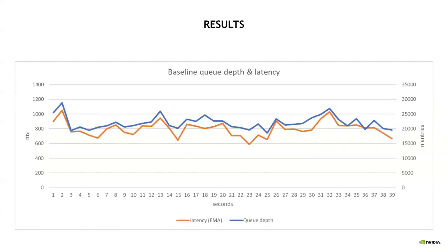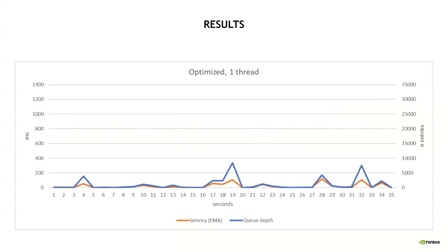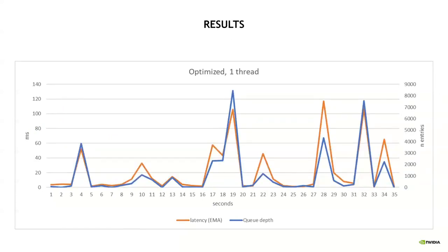This first graph shows the baseline. No change was made to the architecture at this point. The only difference from upstream master is that statistics were collected for the defined metrics and made available. The latency is given in milliseconds and hovers around 800. Enabling the optimizations described, the latency is brought down to an average of 20 milliseconds. In this graph, I kept the same scale for comparison with the previous graph.